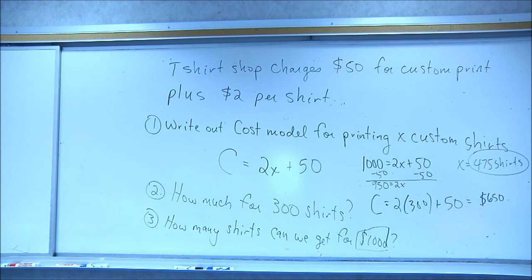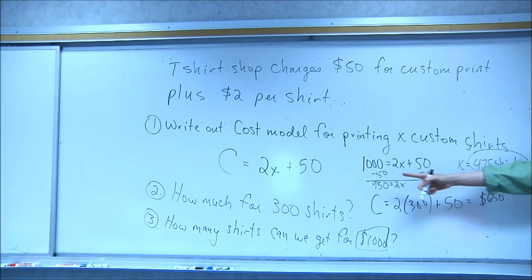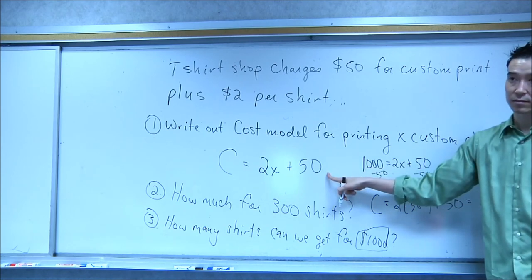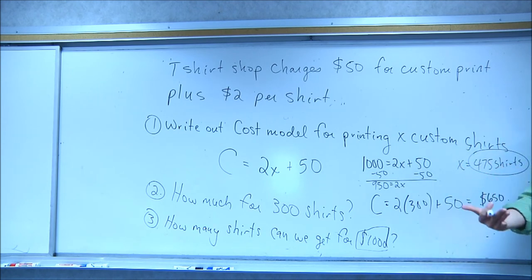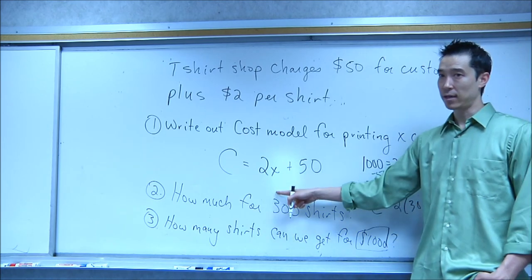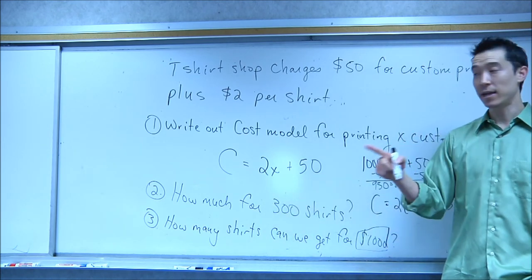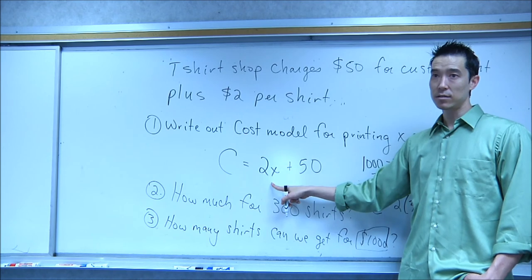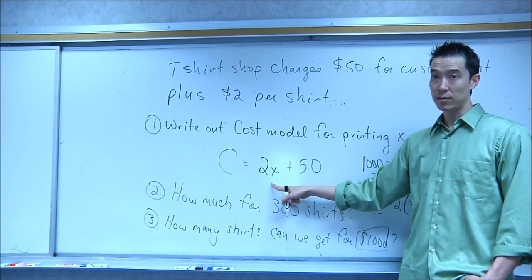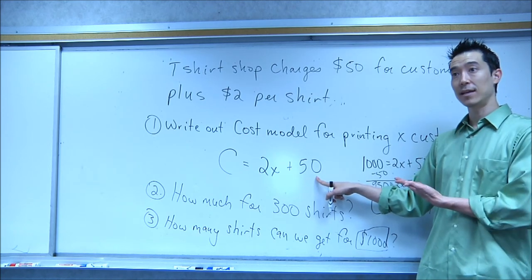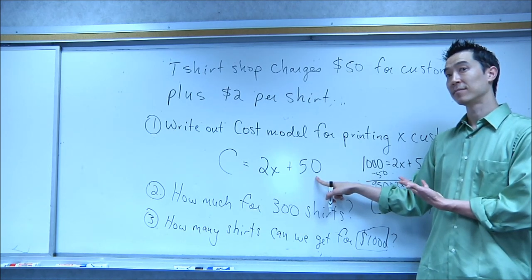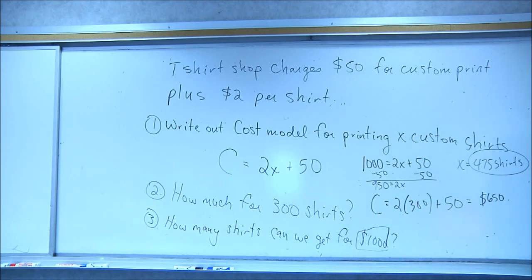What does it cost to just get the custom logo with no shirts? $50 — that's the initial cost. How much does each additional shirt cost? $2 per shirt. So our slope of $2 is the constant rate of change, and the y-intercept of $50 is the initial amount. Let's do one more problem.